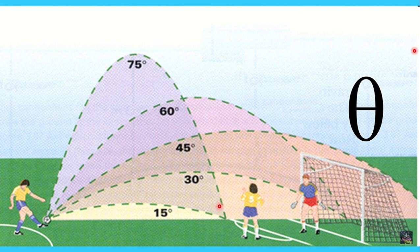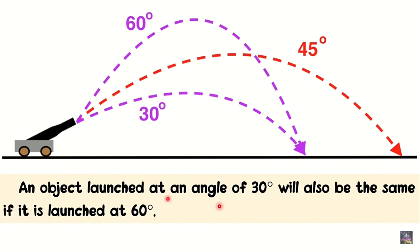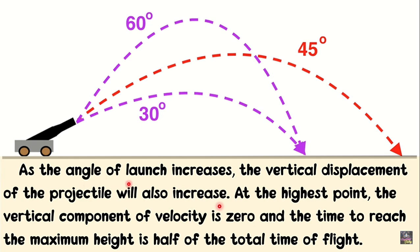Remember, the symbol for angle is theta (θ). The maximum range is achieved if the projectile is fired at 45 degrees with respect to the horizontal. An object launched at 30 degrees will travel the same range as one launched at 60 degrees. These are called complementary angles because when added they result in 90 degrees. As the angle of launch increases, the vertical displacement also increases. At the highest point, the vertical component of velocity is zero, and the time to reach maximum height is half of the total time of flight.